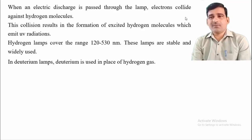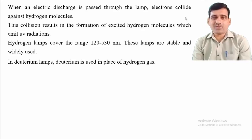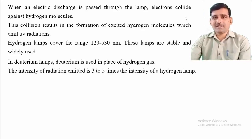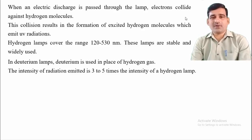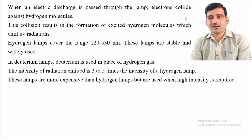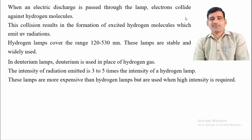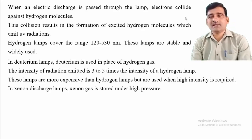In a deuterium lamp, deuterium gas is used in place of hydrogen. The same phenomenon occurs: electrons collide with deuterium molecules, causing excitation, and UV radiation is emitted on return to ground state. The intensity of the deuterium lamp is 3 to 5 times greater than that of the hydrogen lamp. Although more expensive, the deuterium lamp is mainly used in spectrophotometers when high-intensity UV radiation is required.